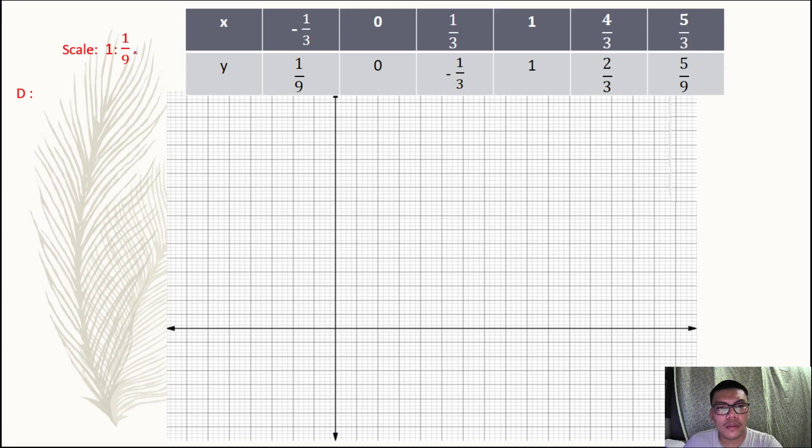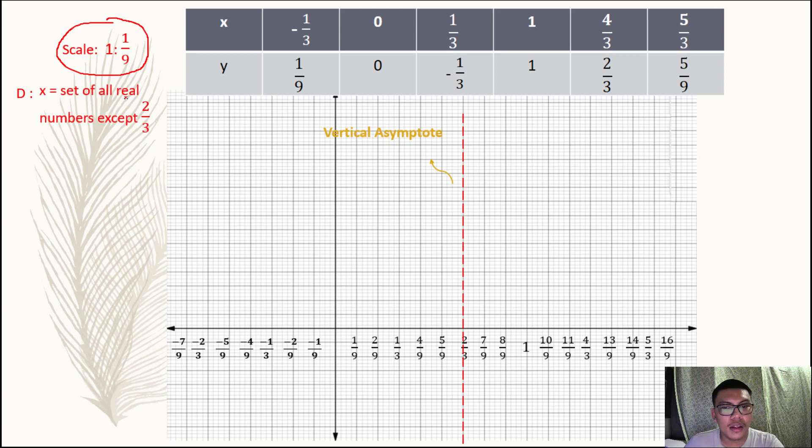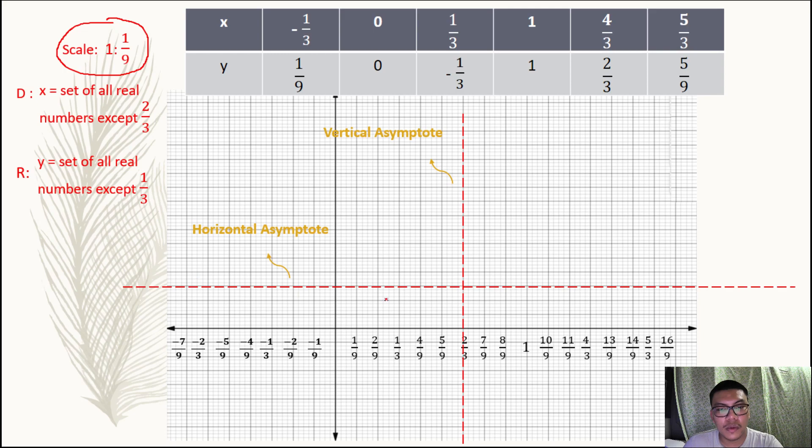I even used a ruler here, but it's up to you to make it to scale so the drawing becomes larger or clearer. So our domain is set of all real numbers except two thirds, that is why we draw a line that will intersect two thirds.